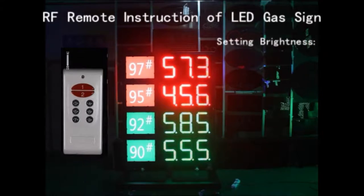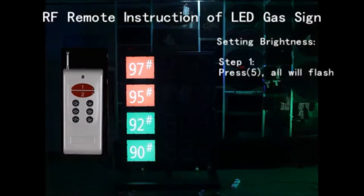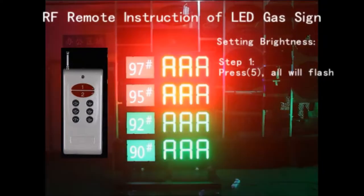RF Remote Instruction of Setting Brightness. Step 1. Under the display working, press button 5. All digits will begin to flash.